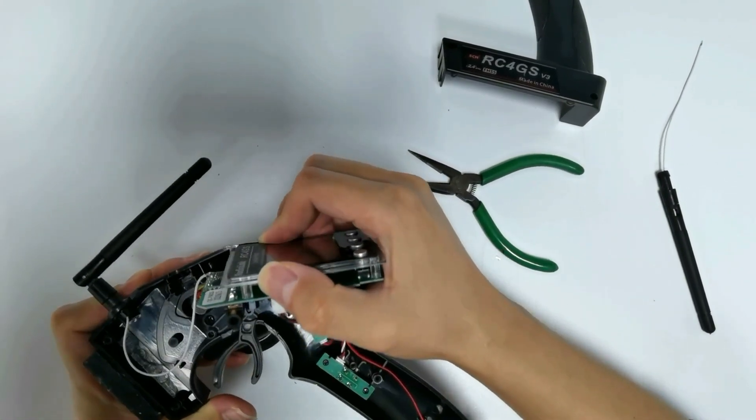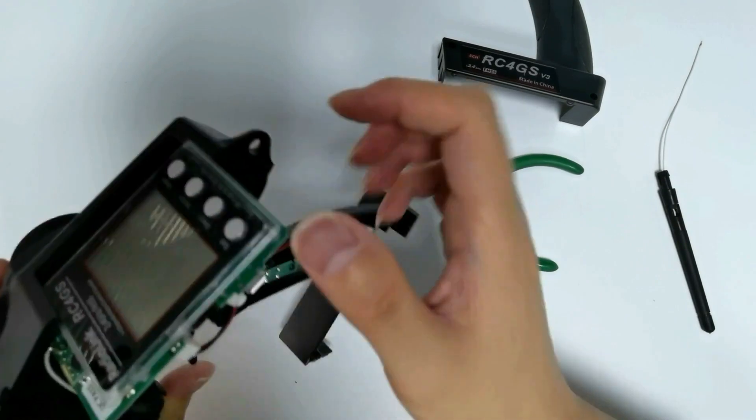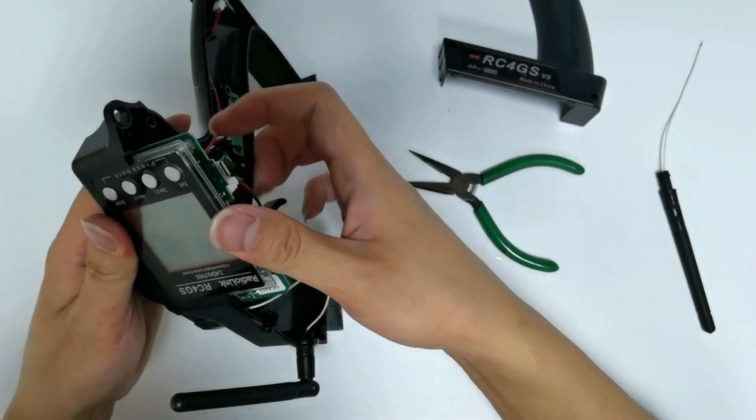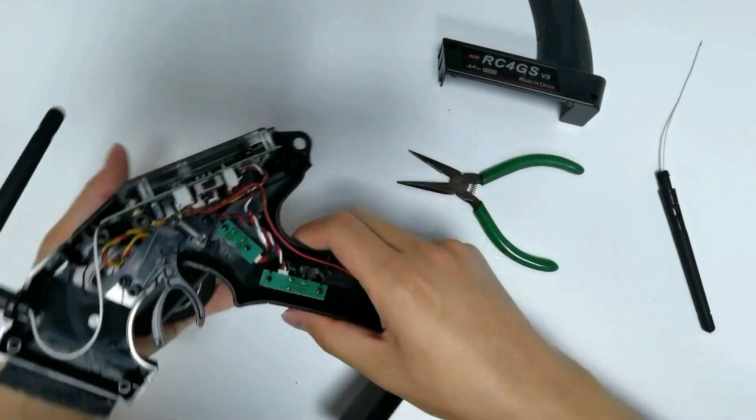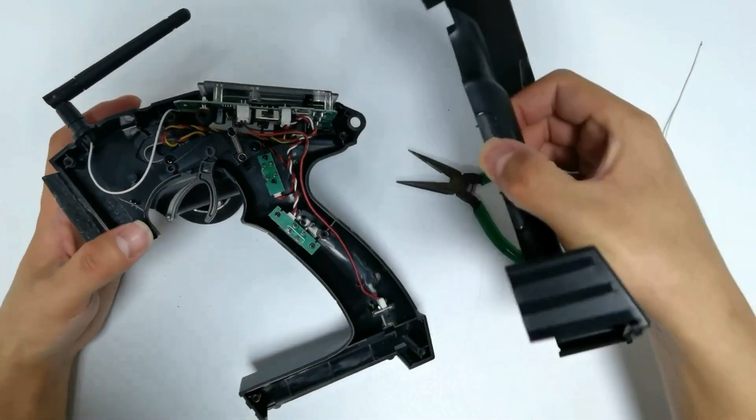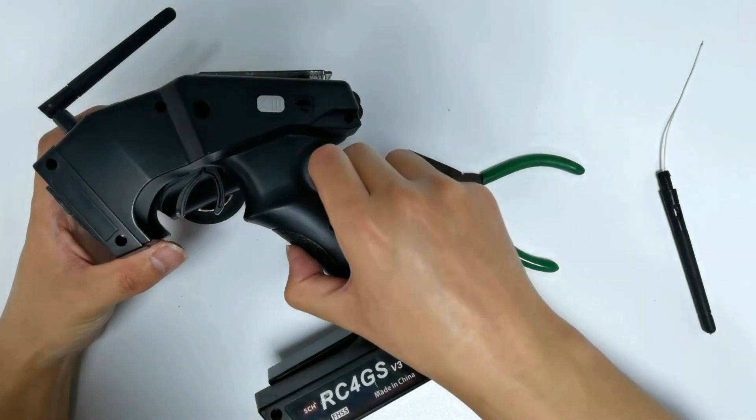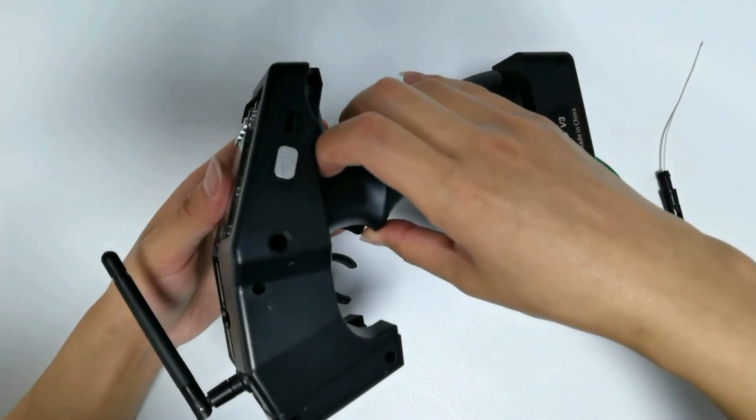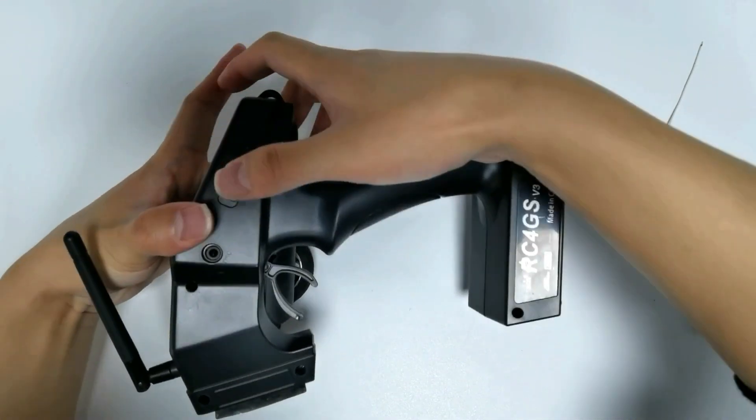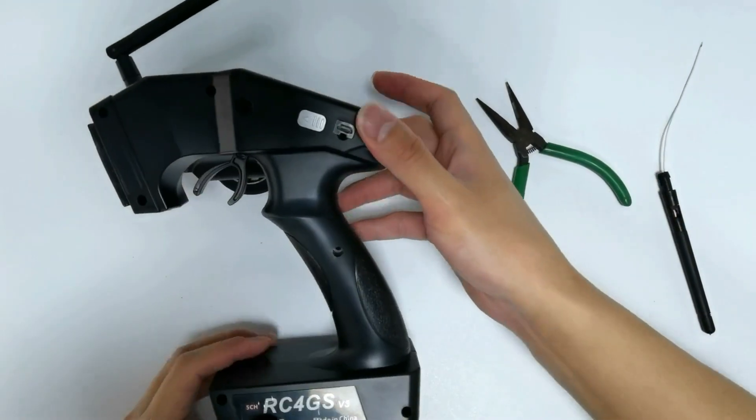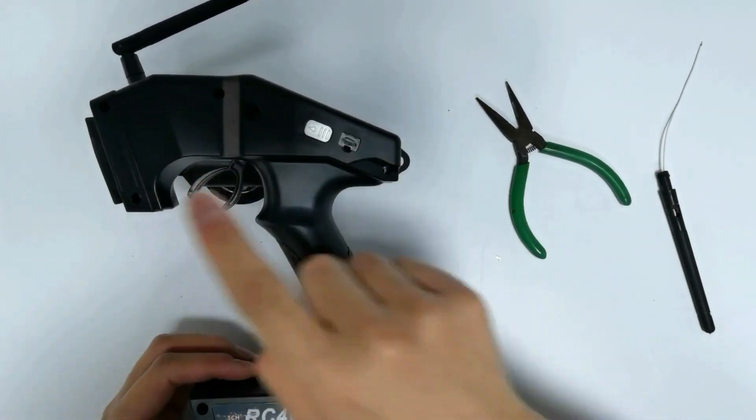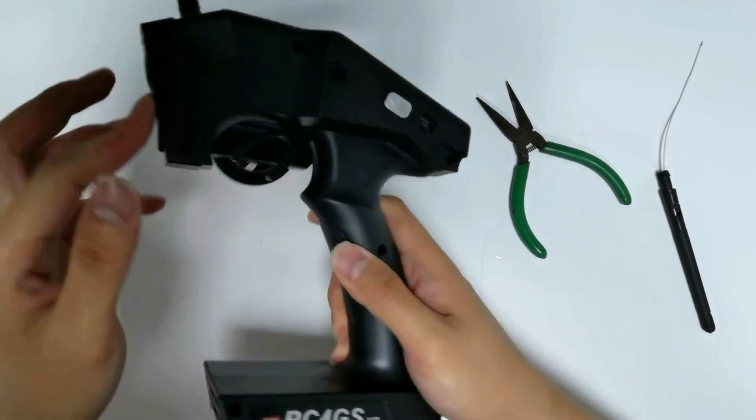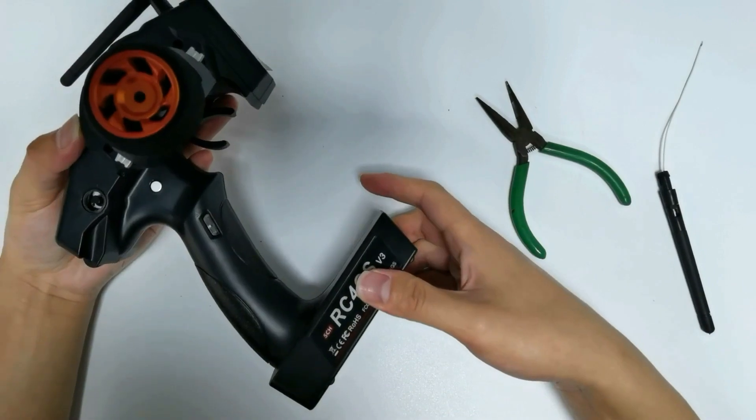Push the board back slowly. Put on the cover. Tighten all the screws and stick back the decorative sheet. The antenna replacement of RC4GS V3 is done.